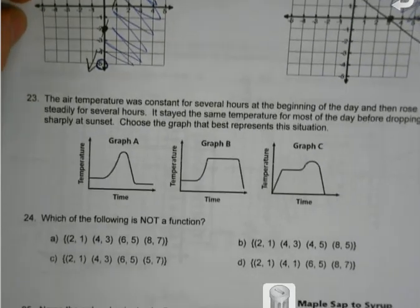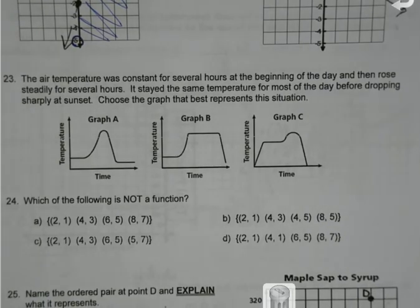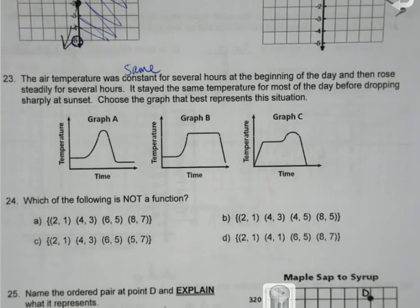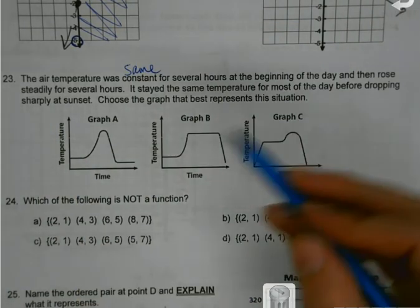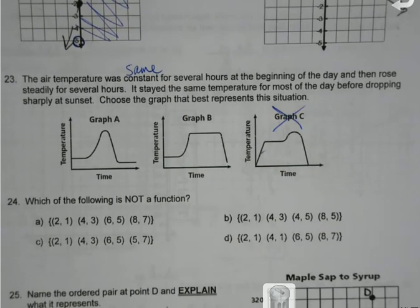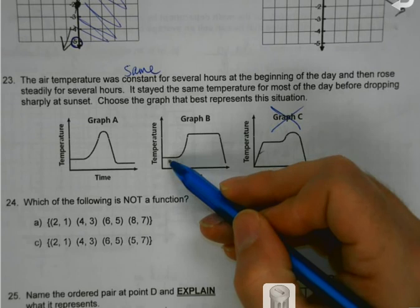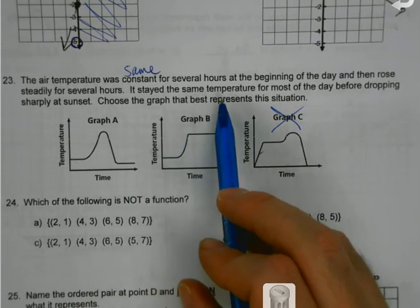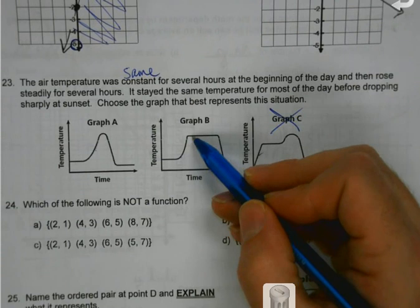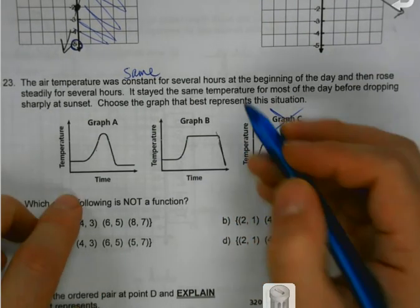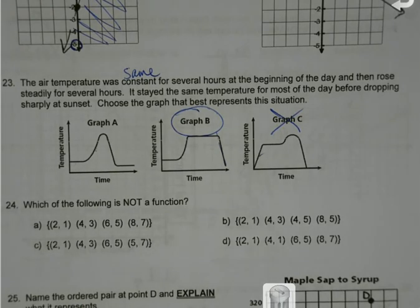Here's a weird one. The air temperature was constant — meaning steady or the same — for several hours at the beginning of the day. Looking at the three graphs, which one doesn't show the temperature staying the same? One graph shows temperature going up, so it's not that one. Then it rose steadily for several hours — both remaining options show rising. It stayed the same for most of the day, then dropped sharply at sunset. So I match the story to the graph that shows flat, then rise, then flat, then sharp drop.